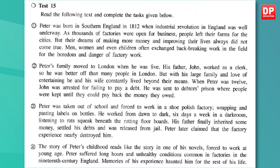Peter was born in southern England in 1812, when the industrial revolution in England was well underway. As thousands of factories were open for business, people left their farms for the cities, but their dreams of making more money and improving their lives did not always come true. Men, women, and even children often exchanged back-breaking work in the fields for the boredom and danger of factory work. Peter's family moved to London when he was five. His father John worked as a clerk, so he was better off than many people in London, but with his large family and love of entertaining, he and his wife constantly lived beyond their means.